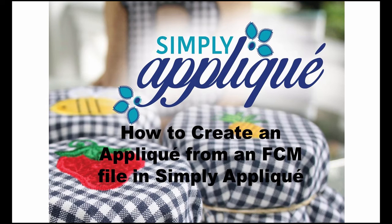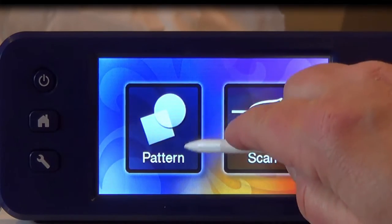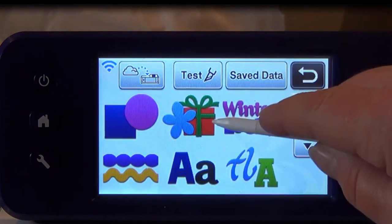Simply Applique has an easy way to convert an FCM file into an applique. The first thing we'll do is at the Scan and Cut machine. We'll choose the pattern and choose the second menu.